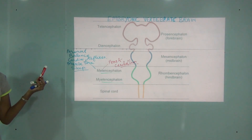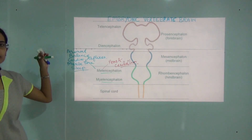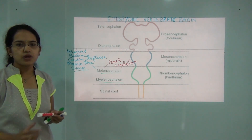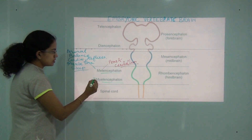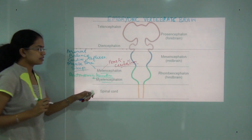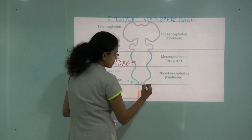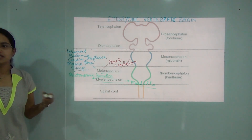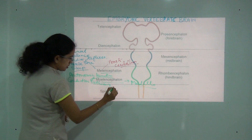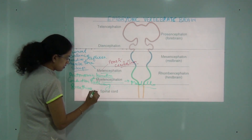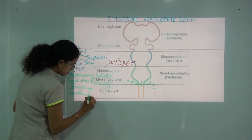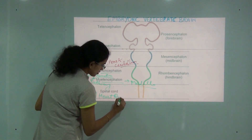Finally, we move on to myelencephalon. Myelencephalon deals with autonomic functions. Since it converts into the medulla oblongata in an adult brain, the functions related to medulla are part of this — conduction pathways, breathing, swallowing, heart rate, and so on.